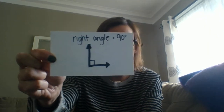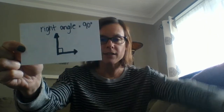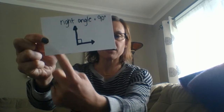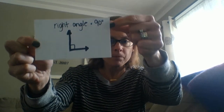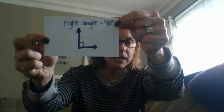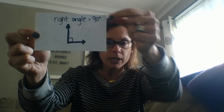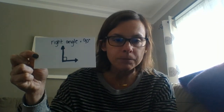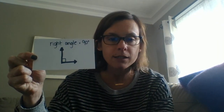We remember that this is a right angle because inside here where that square is, it equals 90 degrees. A right angle is always 90 degrees.